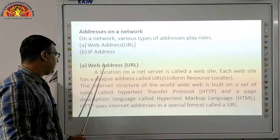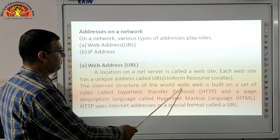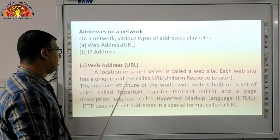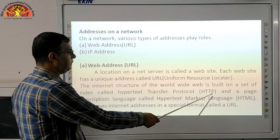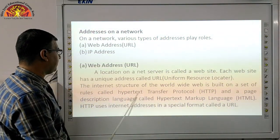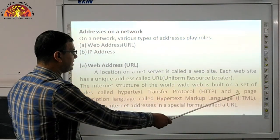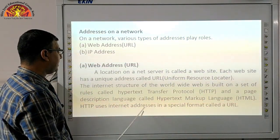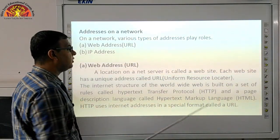The internet structure of the World Wide Web is built on a set of rules called Hypertext Transfer Protocol — HTTP — and a page description language called Hypertext Markup Language — HTML. HTTP uses internet addresses in a specific format called a URL.